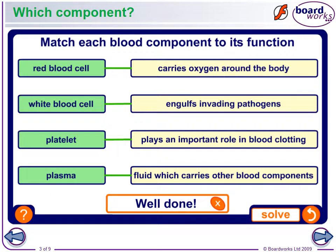Now let's match each blood cell component to its function. Does the red blood cell engulf pathogens? Is it a fluid? Does it carry oxygen? Does it play an important role in blood clotting? It carries oxygen around the body. Do white blood cells engulf pathogens? Are they a fluid? Do they play an important role in blood clotting?